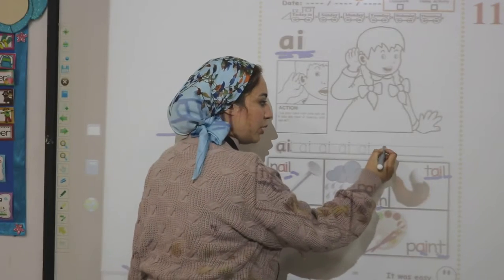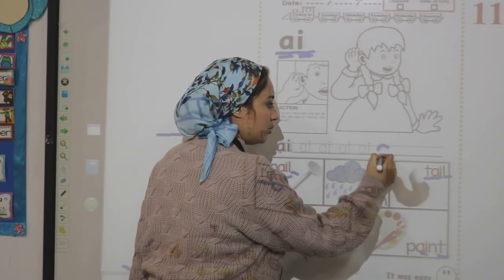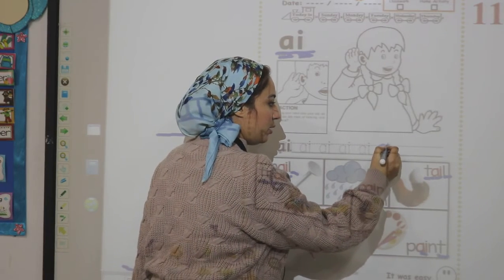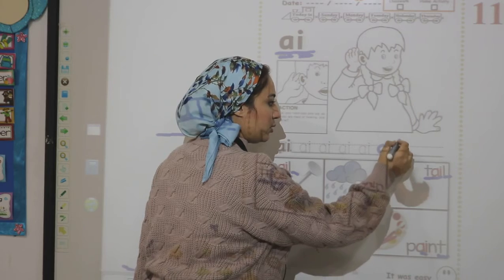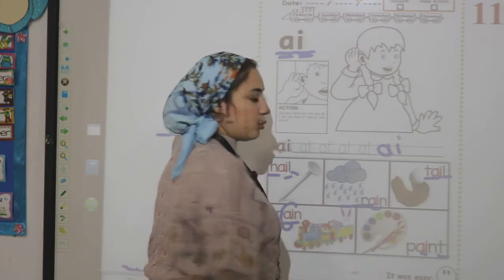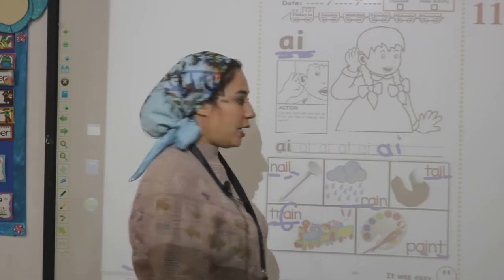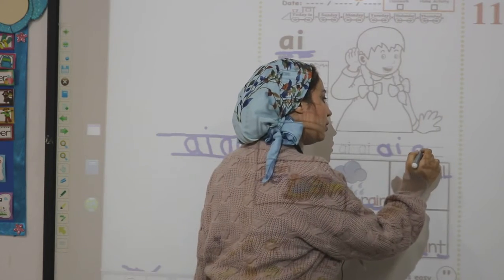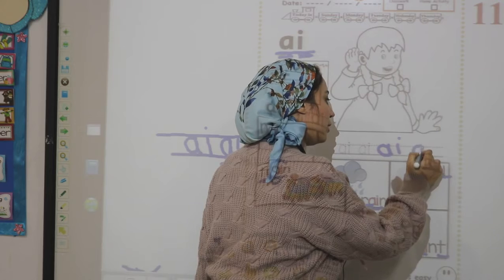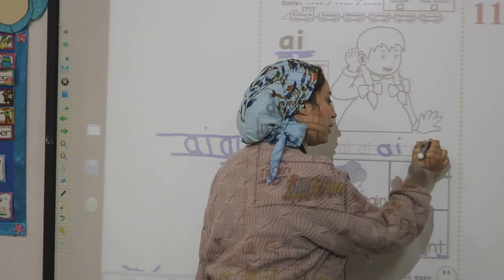So how do we write the sound A? Semi-circle up and down, down stick and dot. How to write sound A? Semi-circle up and down, down stick and dot.